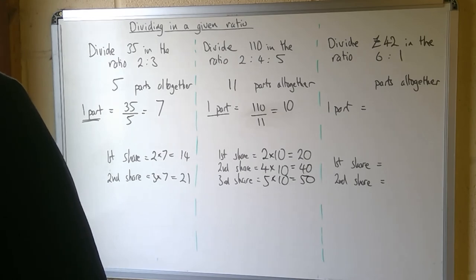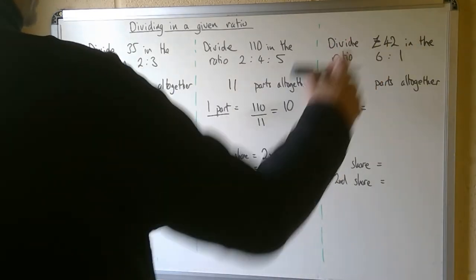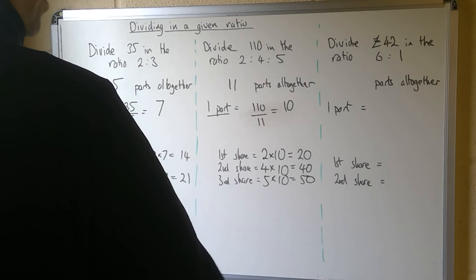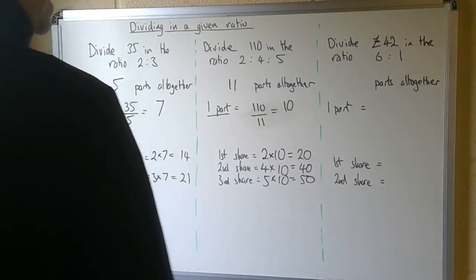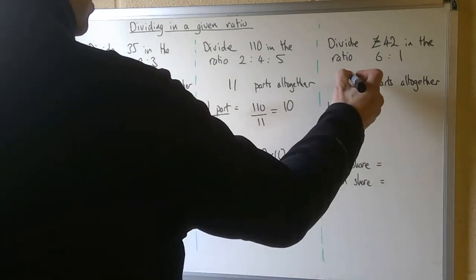Third example, same idea, just a real-life example this time. I'm sharing £42 in the ratio 6 to 1. So you should already have an idea that the first share is going to be six times bigger than the second one, so we can use that as a check as well. So seven parts altogether.